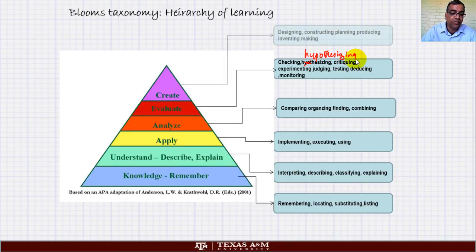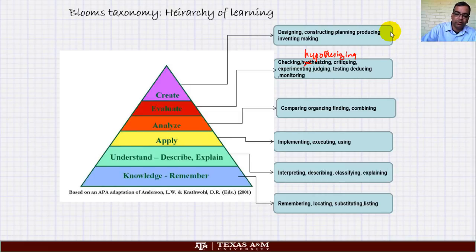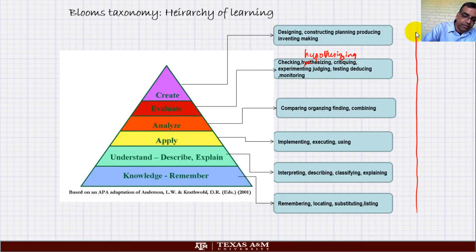Next to that is evaluate. This is checking, hypothesizing, critiquing, experimenting, judging, testing, deducing, monitoring. And then at the very highest level, design, construct, plan, produce, invent, make. What happens is as you go from your freshman level you go up like this. So a third year class is not more complicated than a second year class, it is at a higher level of thinking.